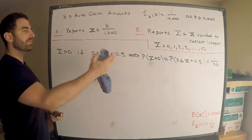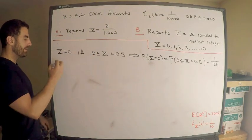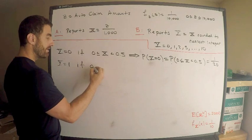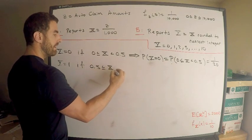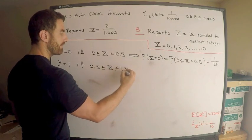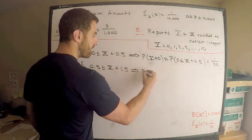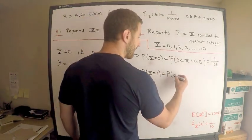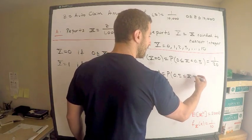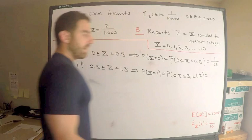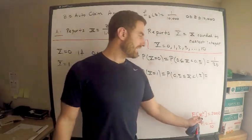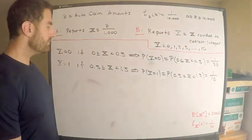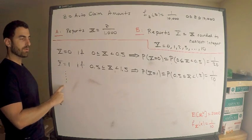What if Y equals 1? Y equals 1 when 0.5 ≤ X < 1.5. So the probability that Y = 1 equals the probability that X is between 0.5 and 1.5, which is 1/10 times the length of the interval — that's 1/10. Continue this for Y = 2, 3, and so on; you'll see the pattern. The probability mass is 1/10 for each of those values.